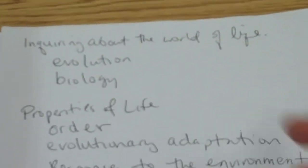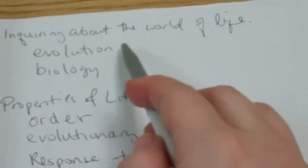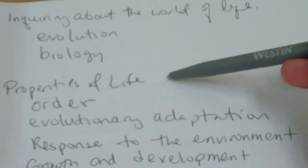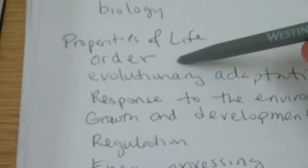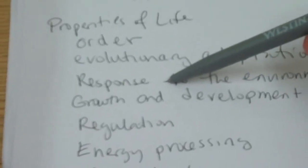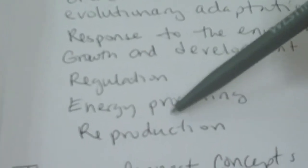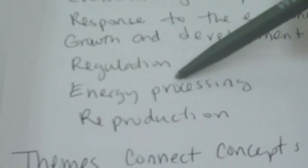As I start to write this down, I'm going to have a piece of paper that looks kind of like this. You can see I've written down the first theme, 'Inquiring About the World of Life,' and then the two bold words: evolution and biology. Then I went and did the properties of life based on that figure, and I just wrote down the bold words: order, evolutionary adaptation, response to the environment, growth and development, regulation, energy processing, and reproduction. That figure says that these are properties that all of life has.